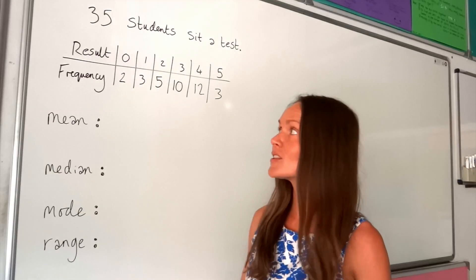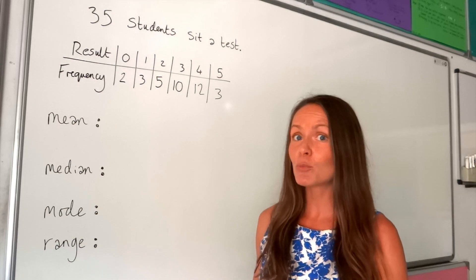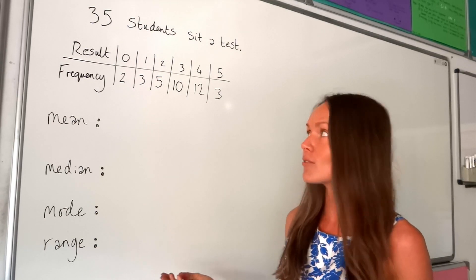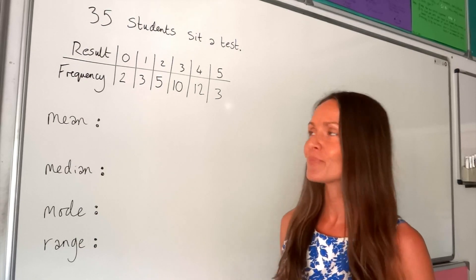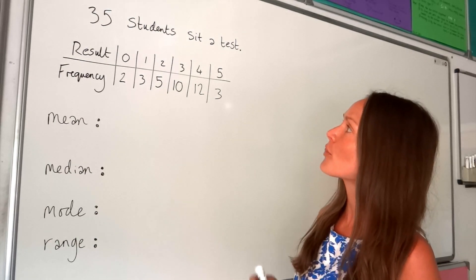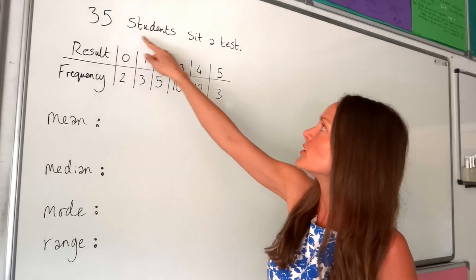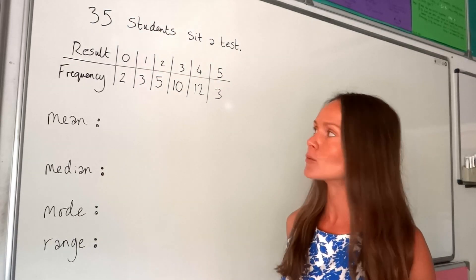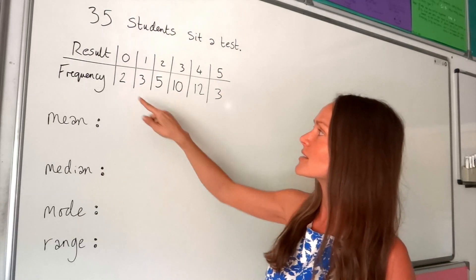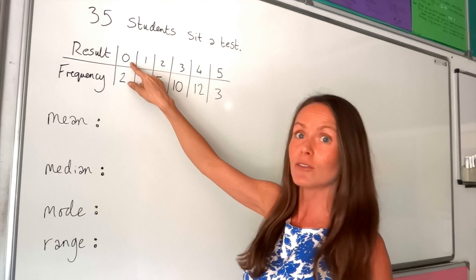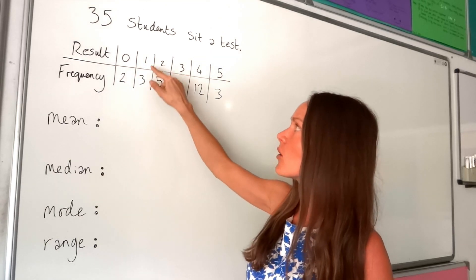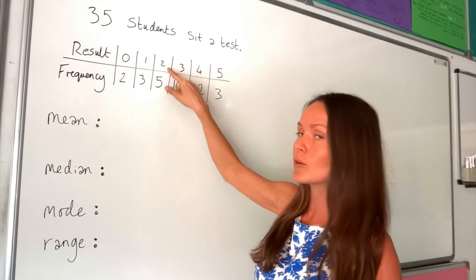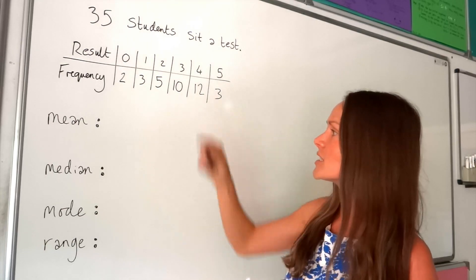On to the second example. Maybe you'd like to pause the video and have a go yourself, then check at the end. In this one, we have 35 students who sit a test, and in the table we have their test results. Two students got a score of zero, three got a score of one, five got a score of two, and so on.